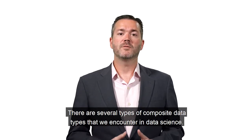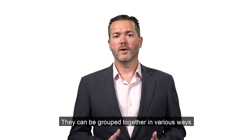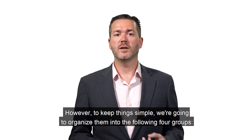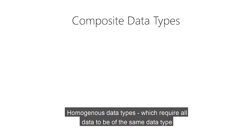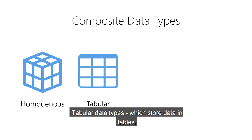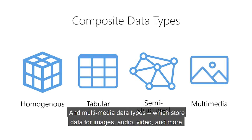There are several types of composite data types that we encounter in Data Science. They can be grouped together in various ways, however, to keep things simple, we're going to organize them into the following four groups: homogenous data types, which require all data to be of the same data type; tabular data types, which store data in tables; semi-structured data types, which store data as a set of relationships; and multimedia data types, which store data for images, audio, video, and more.